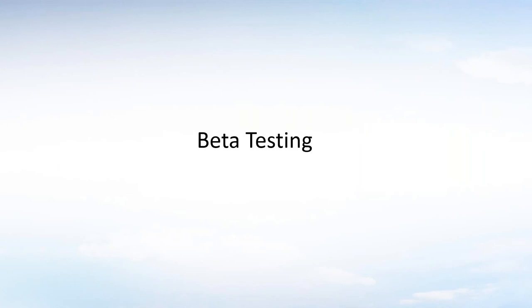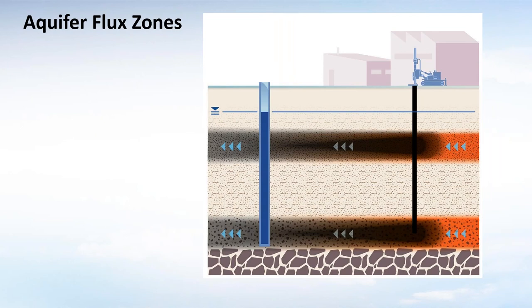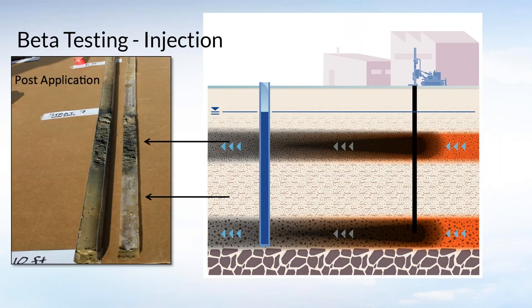That took about six years. We then started beta testing the product in the real world. Identifying flux zones is key — much more so than with consumable donors or electron acceptors, which diffuse and move into treatment areas. Here we're constructing a subsurface activated carbon filter, so we need to get it in the right location. You can see on the sites when we inject where the Plume Stop gets placed. On this beta site, you've got clay, then a gravelly layer, then clay — and you can see that gravel gets painted black.